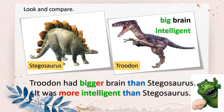Let's look at this example. Troodon had a bigger brain than Stegosaurus. It referred to Troodon — it was more intelligent than Stegosaurus. So you have the adjectives 'big' and 'intelligent'. 'Big' is a short adjective, so you use -ER and double the last letter because of the consonant-vowel-consonant pattern. 'Intelligent' has four syllables, so you have to use 'more'. You cannot put -ER. After the comparative form of adjectives, you must have the word 'than'.